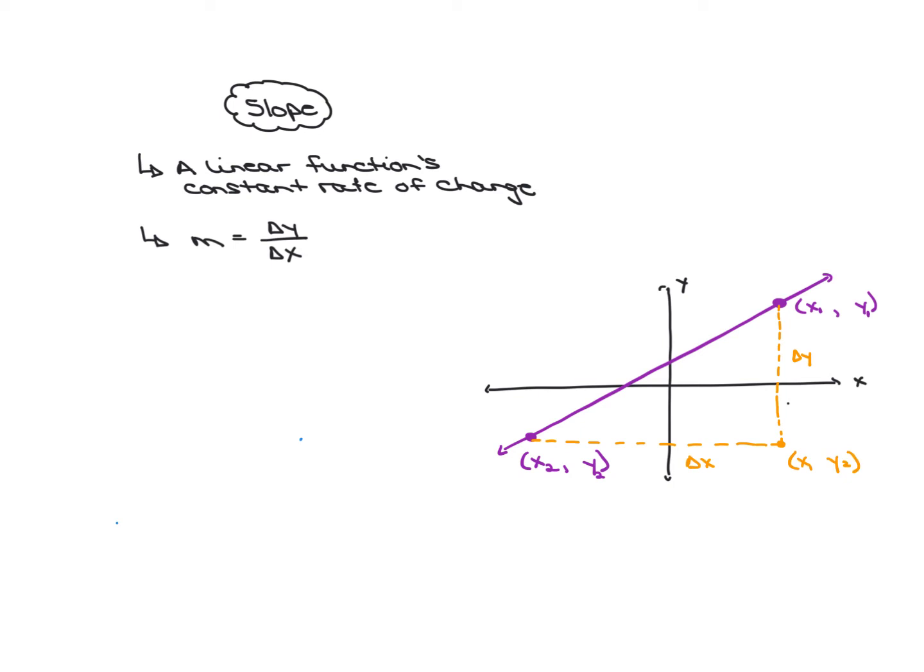Okay, some people, and this is typically for older people, some people will call the change in y, another word for that is the rise, because you're going up and down, and some people will call the change in x the run. So, I just want you to know that. So, some people, when they talk about slope, they say it's rise over run. All right, that's just a little segue.